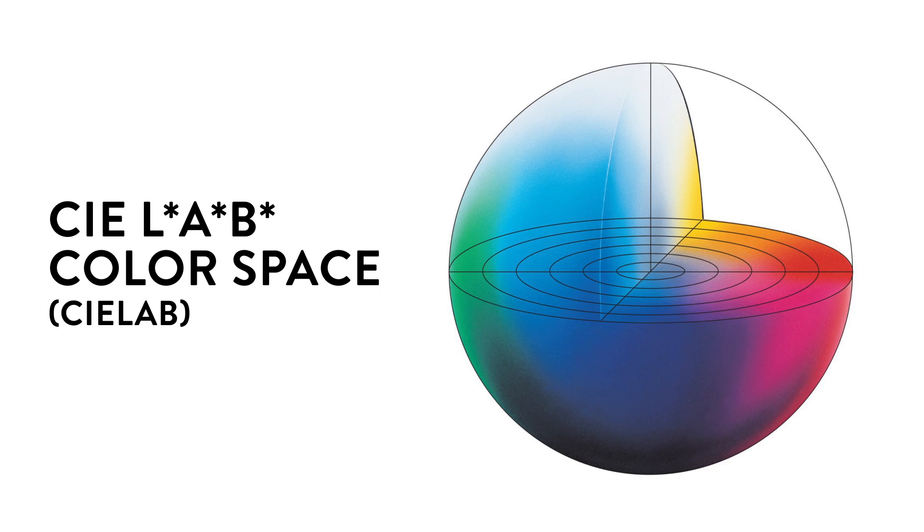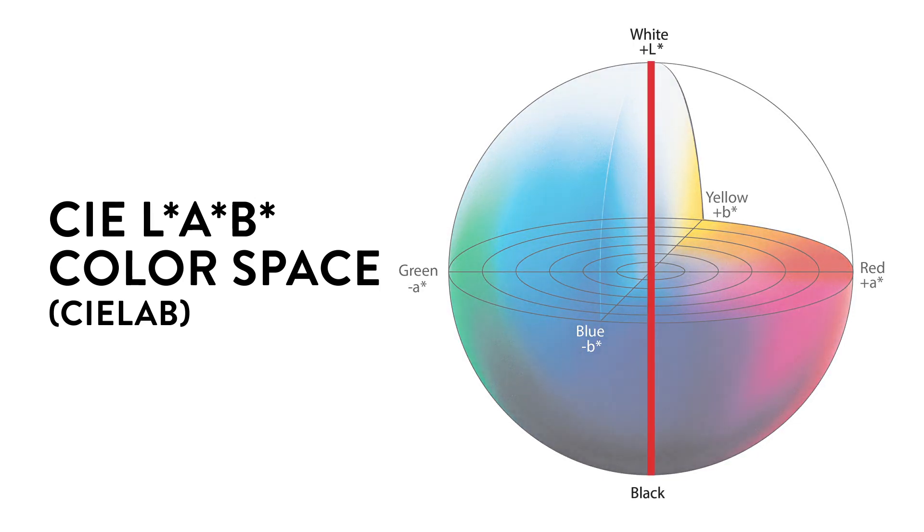The CIE L star, A star, B star color space is a 3D sphere system. It uses coordinates to express color. The L star axis indicates the lightness of a color, with 0 representing black and 100 representing a perfect diffuse white.